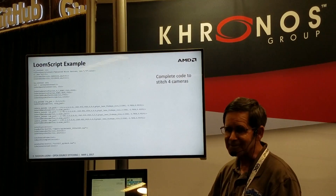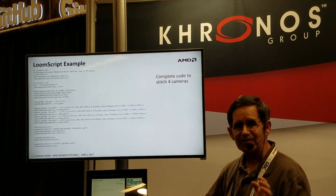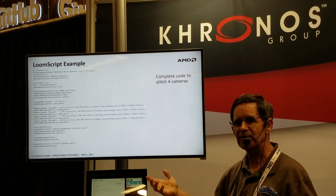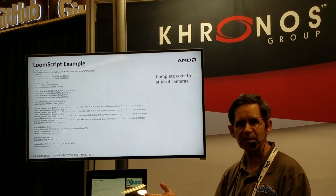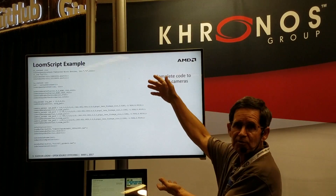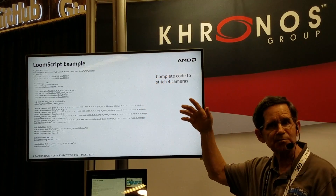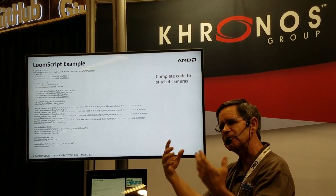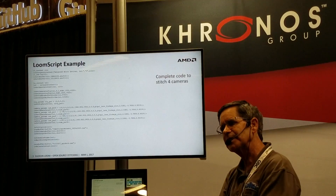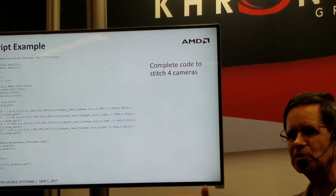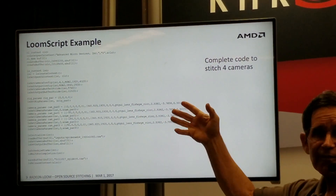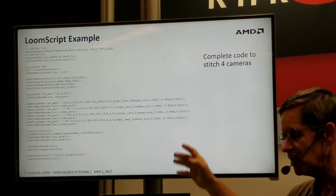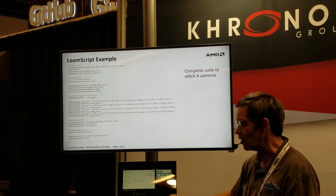You're not going to be able to read this unless you get up really close. We built a scripting language into Loom that allows you to build an entire stitching application in this much code. So this is basically a batch file that says: I have this many cameras with this kind of lenses and I want to stitch them to this resolution. You don't really have to write pages and pages of code — this example does that whole thing. You can still write all the C code you want.